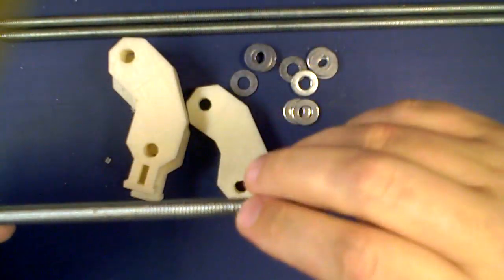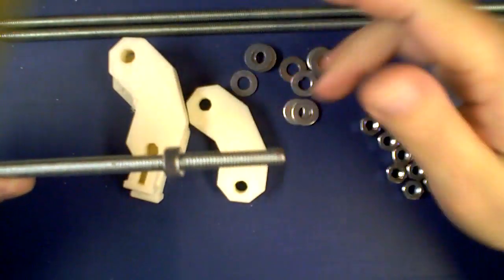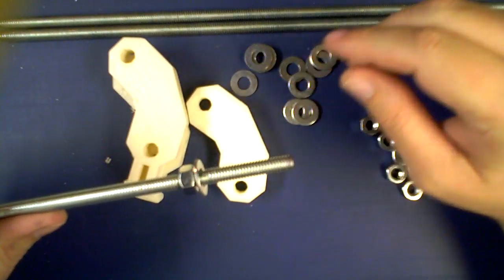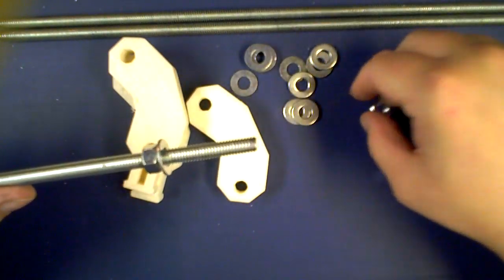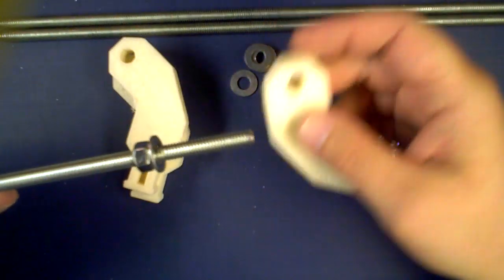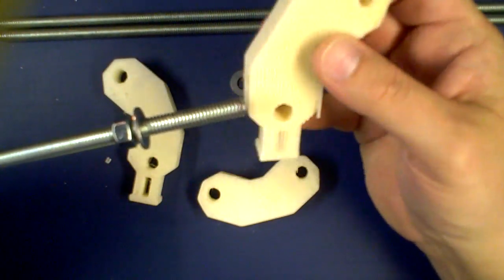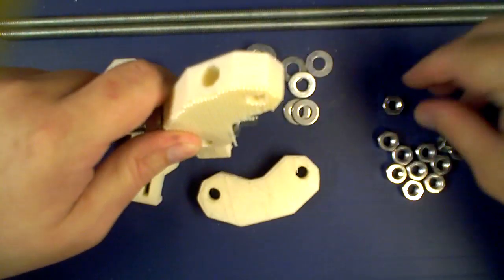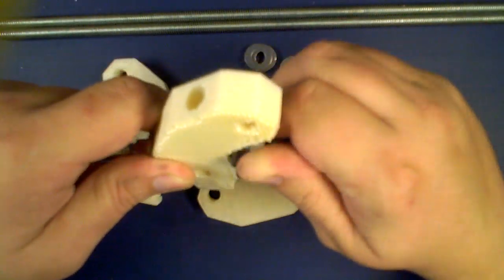You're also going to need your two RP parts, which I mentioned. You're going to need, for each side, three pieces of threaded rod. Those pieces of threaded rod will be 330 millimeters long each.